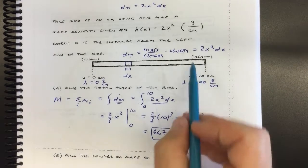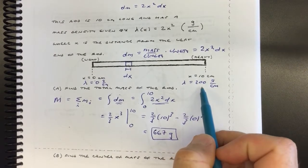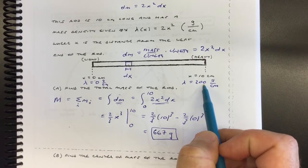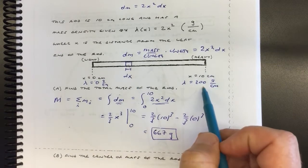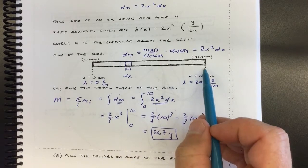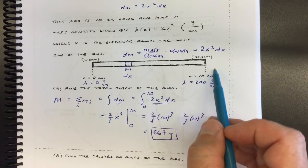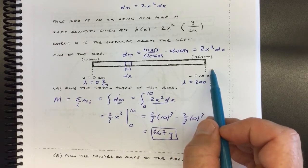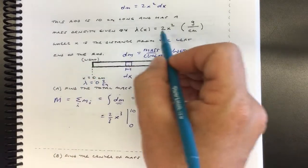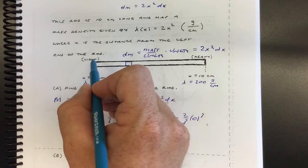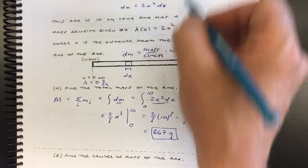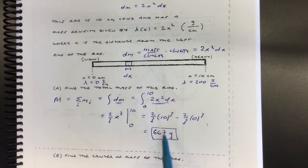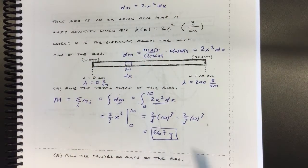Just to sanity-check it: if the whole thing were 200 grams per centimeter and 10 centimeters long, it would weigh 2000 grams. But the mass density actually grows parabolically — it starts light and grows and grows. So 667 grams makes sense as the total mass.